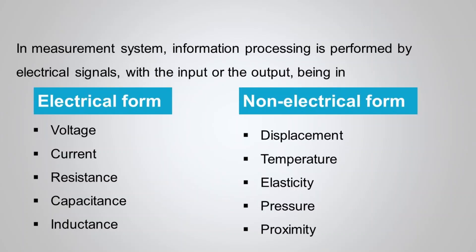A transducer has at least one input and one output. In a measurement system, information processing is performed by electrical signals, with either the input or the output being of electrical nature such as voltage, current, resistance, capacitance, and so on, whereas the other is a non-electrical signal such as displacement, temperature, elasticity, and so on.